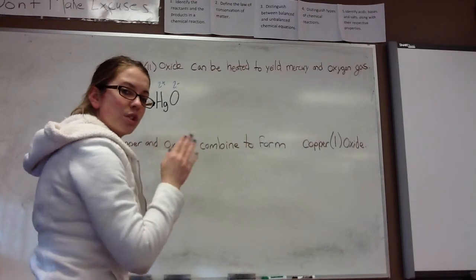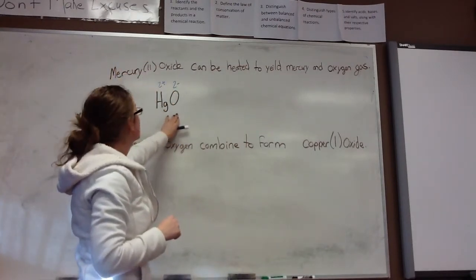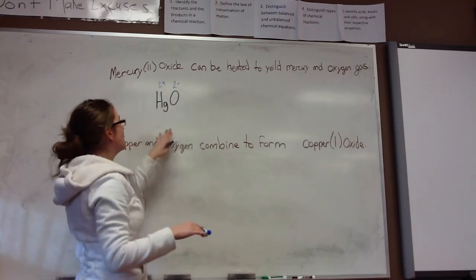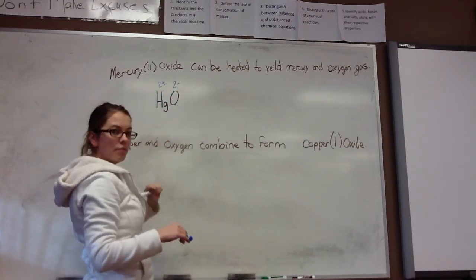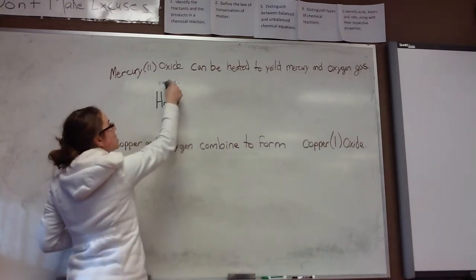When it gains 2 electrons, it would have a charge of negative 2. So as an ion, oxygen is usually found as oxygen negative 2 charge. Positive 2 and negative 2 cancel each other out. So we know that this must be the right formula for mercury oxide. I'm going to go ahead and erase our charges.